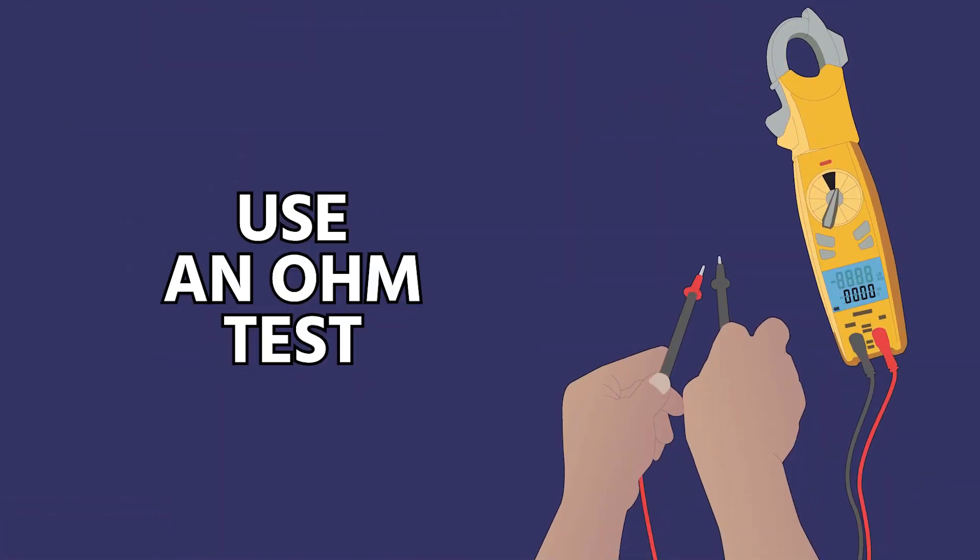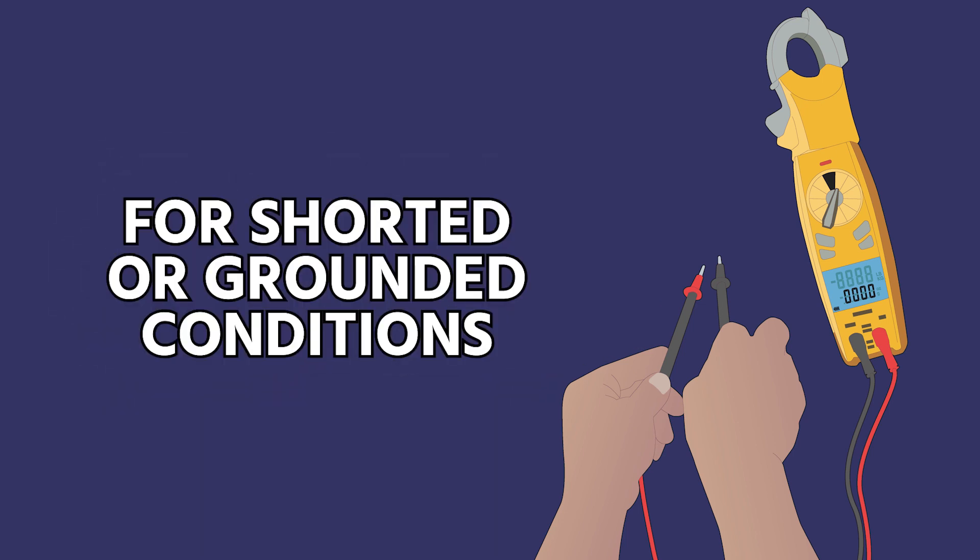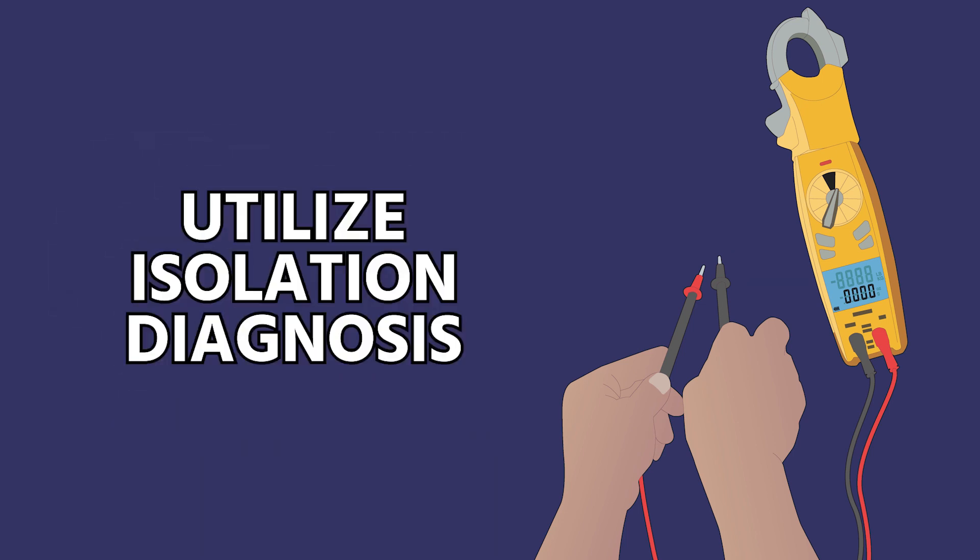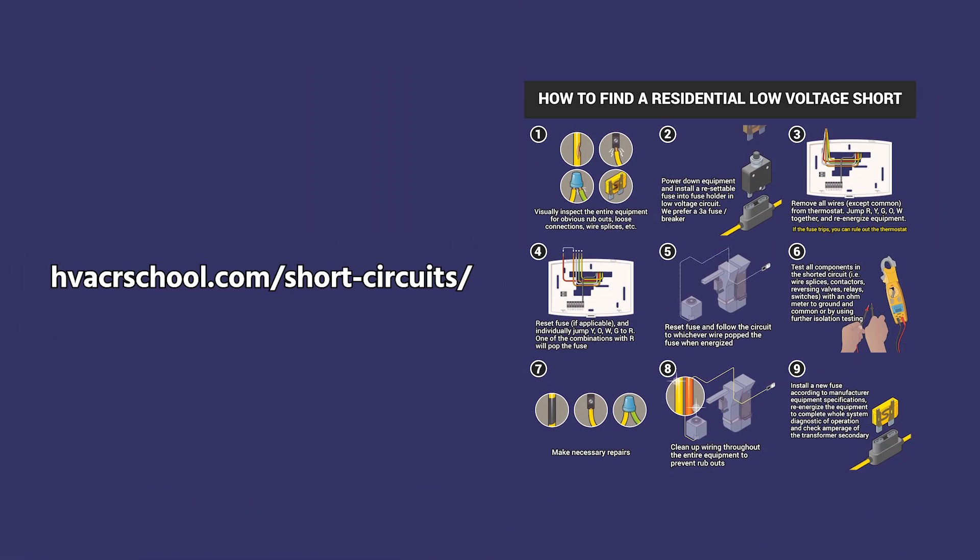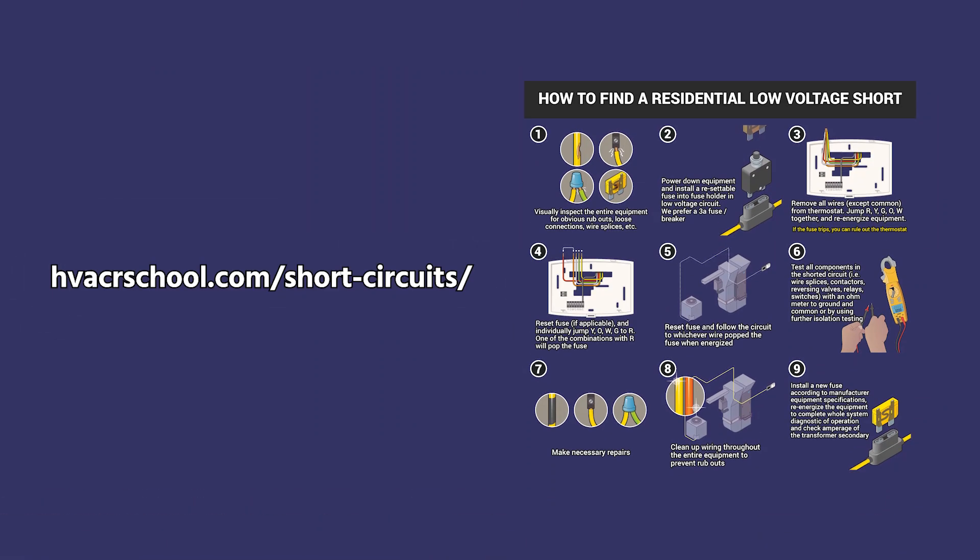But you want to follow best practices as far as use an ohm test, check all of your loads, check your circuits for shorted or grounded conditions, and also utilize isolation diagnosis. We've done another video on isolation diagnosis of low voltage circuits and we have a nine panel process for that on the HVAC School app for finding low voltage shorts.